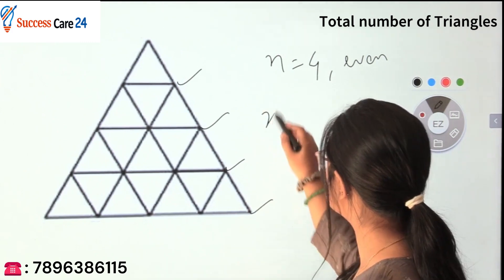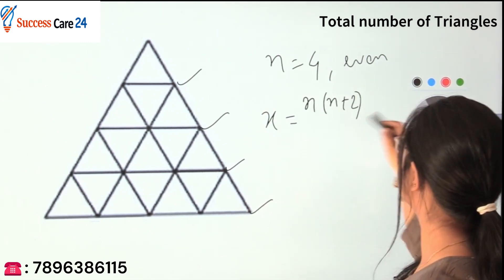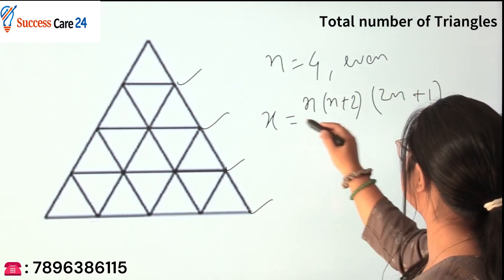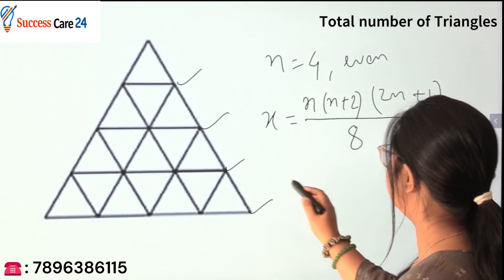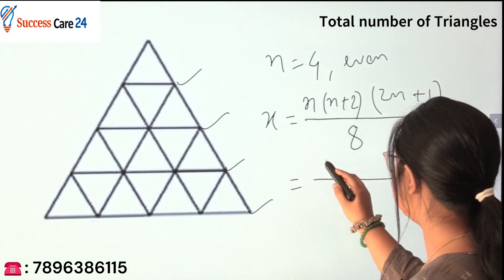What is the formula? x equals n times (n+2) times (2n+1) divided by 8. Now put the value of n here. n is 4, so it is 4 times (n+2), which is 6.